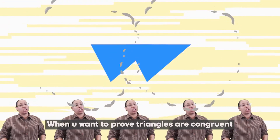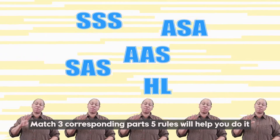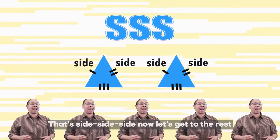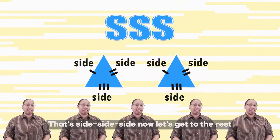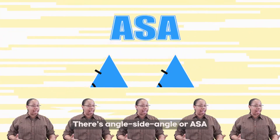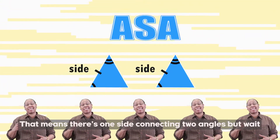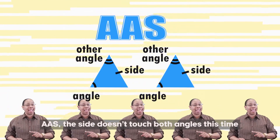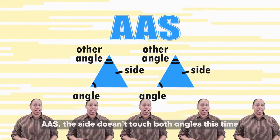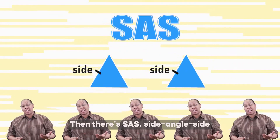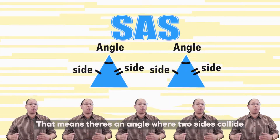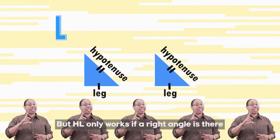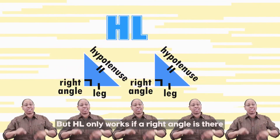When you want to prove triangles are congruent, match the corresponding parts — five rules will help you do it. SSS: side, side, side. ASA: a side connecting two angles. AAS: the side doesn't touch both angles. SAS: an angle where two sides collide. And last but not least, hypotenuse leg — HL only works if a right angle is there.